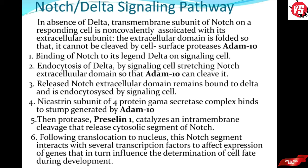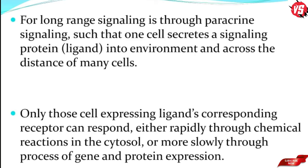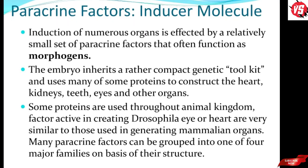Long-range signaling is through paracrine signaling, such that one cell secretes a signaling protein or ligand into the environment and it travels across the distance of many cells. Only cells expressing the corresponding receptor can respond to the ligand. Cells respond either rapidly through chemical reactions in the cytosol, or more slowly through gene and protein expression.